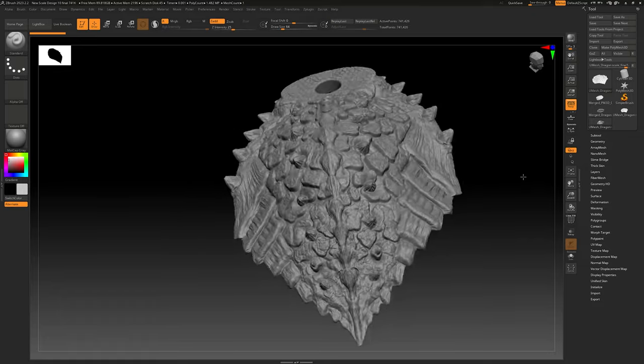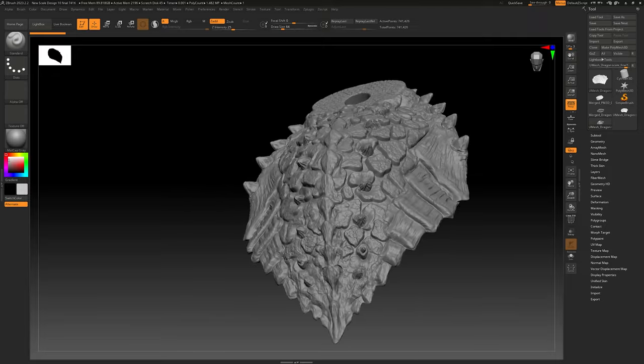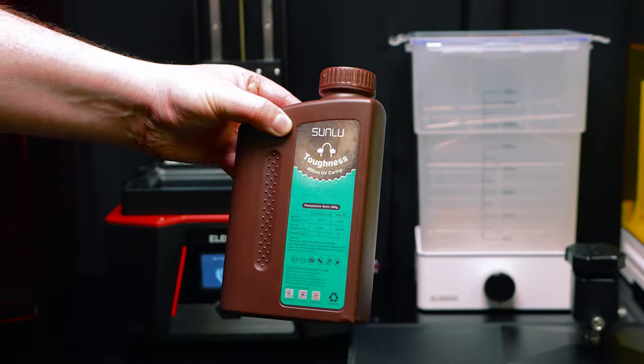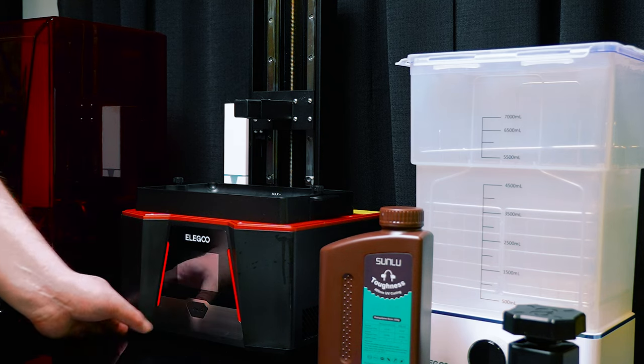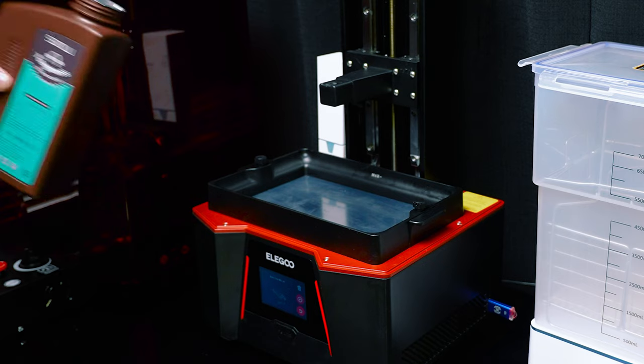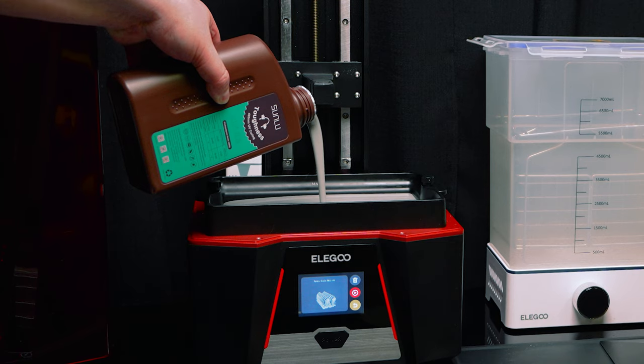For round two, it was clear that I was going to need something stronger. So after a few experiments, I determined that Sunlue Toughness worked really well for this project. I would like to test more of their product line and other brands too. So drop a comment and let me know if you have any thoughts on what resin I should try for the full build.